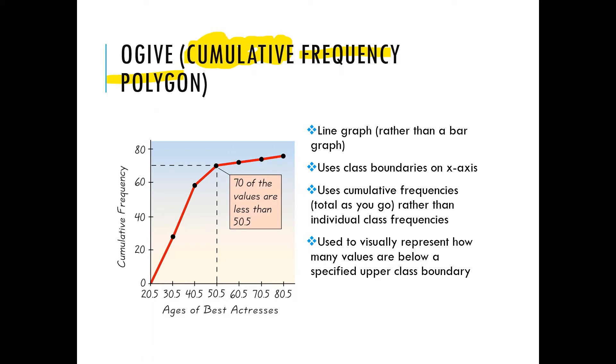So it's a line graph rather than a bar graph. It uses class boundaries on the x-axis, like histograms. And it uses the cumulative frequencies, or total as you go, for the y-axis rather than the individual frequencies.